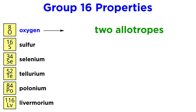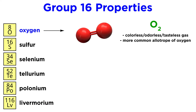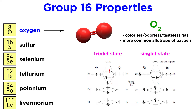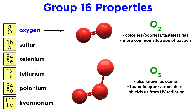In terms of properties, oxygen has two major allotropes. Diatomic oxygen is a colorless, odorless, tasteless gas, and it is by far the more common. This has both a singlet and triplet state, which differ in whether the two highest energy electrons are paired in the same orbital with opposite spin, or alone in separate orbitals with spin aligned, the latter of which is more common and is the ground state. The other allotrope is ozone, or O3.